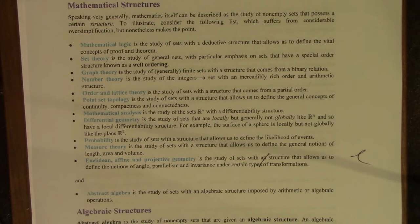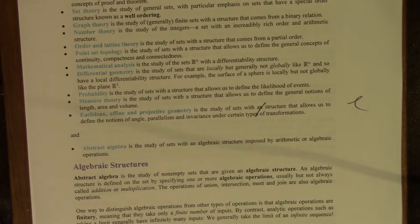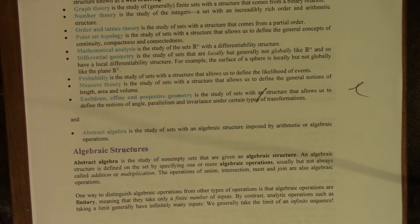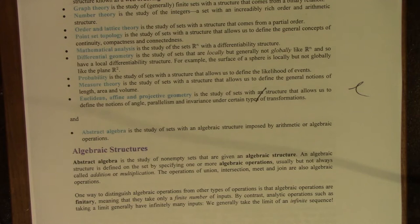Abstract algebra is the study of sets with an algebraic structure imposed by arithmetic or algebraic operations — some people would say arithmetic, some would say algebraic, they're the same thing. Now let's take a look at algebraic structures.